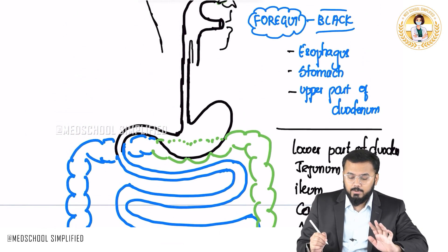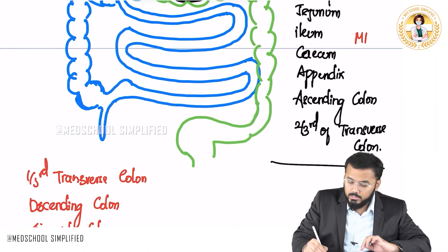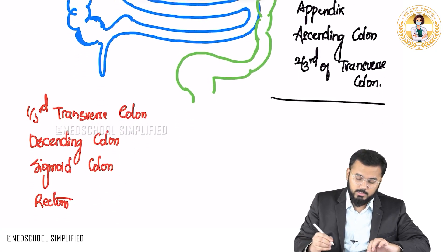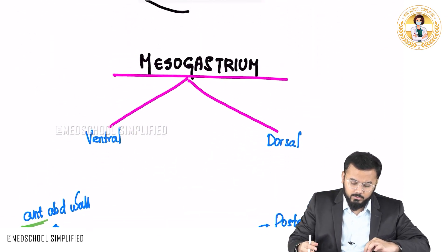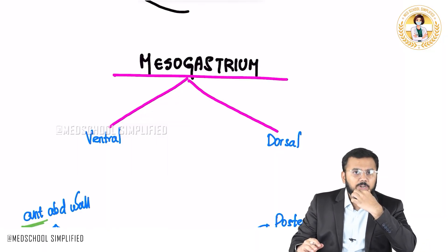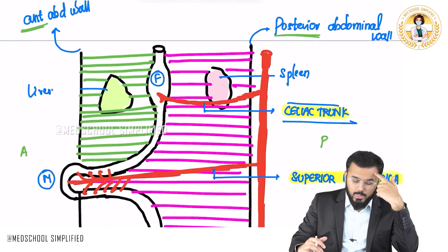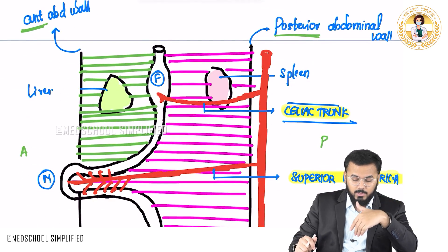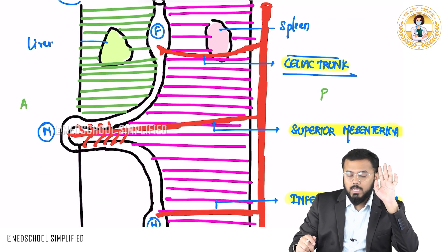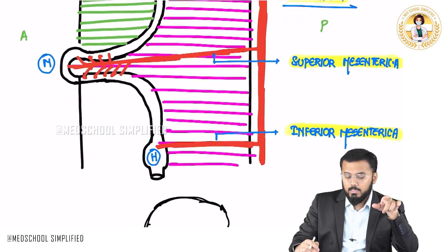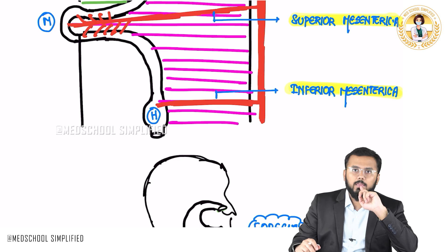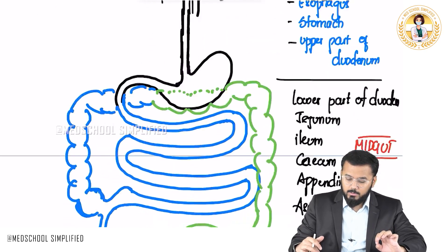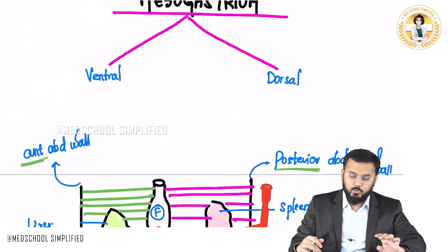So, to summarize: we discussed mesogastrium — ventral mesogastrium is small, dorsal mesogastrium is large. The artery of the foregut is the celiac trunk, the artery of the midgut is the superior mesenteric artery, and the artery of the hindgut is the inferior mesenteric artery. These are the important things you need to know. Thank you so much for watching. Goodbye.